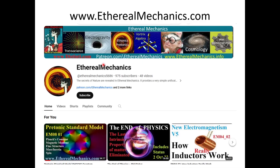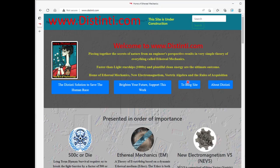You're on the Ethereal Mechanics YouTube channel now. This is the intro video. If you go to any one of the playlists, you will find the New Electromagnetism playlist or the Vortex Algebra, Ethonic - this has not been produced yet, Electrogravity, Transvariance, and New Electromagnetism V5. Well, Vortex Algebra right now is just a paper. There will be a video put out in a little while. This is later research after Cosmology is done.